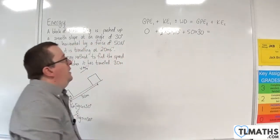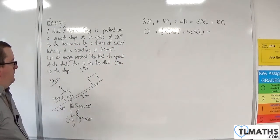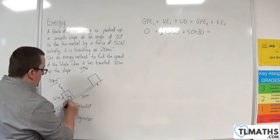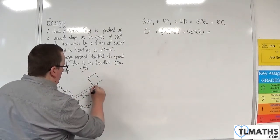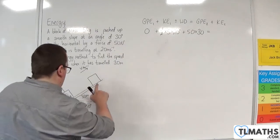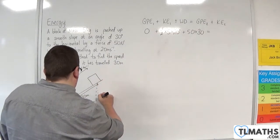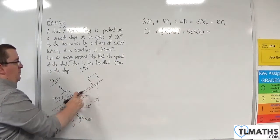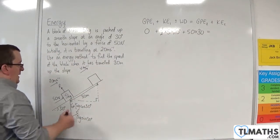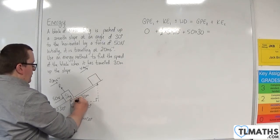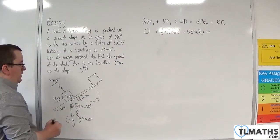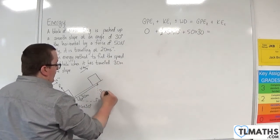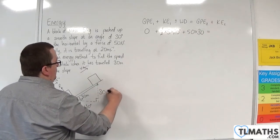We've got the final gravitational potential energy. For that, we need to think about what is that height. If we think about this as one large triangle, then we know that the hypotenuse is 30, and this angle here will be 30 degrees. So that means that this height will be 30 meters times sine of 30.